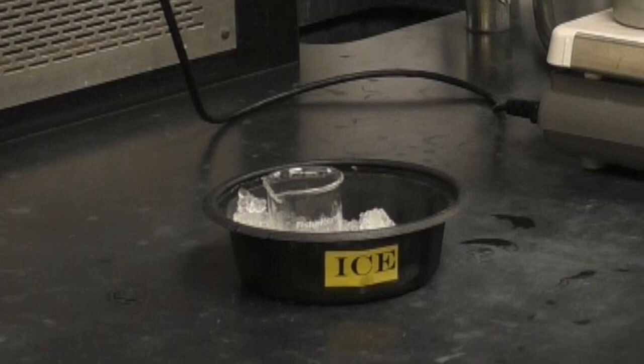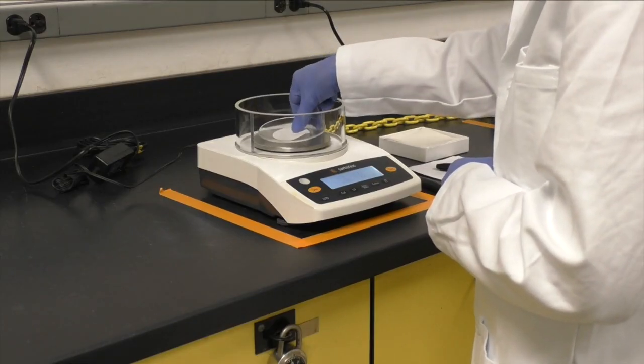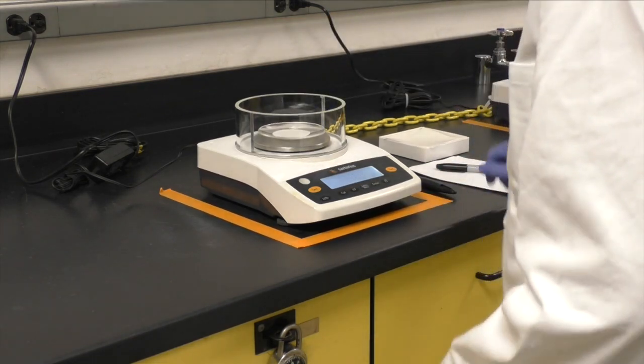While the mixture is separating, put about 10 to 20 milliliters of 95% ethanol in an ice bath to chill. Also, pre-weigh a piece of filter paper and a watch glass.